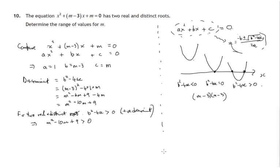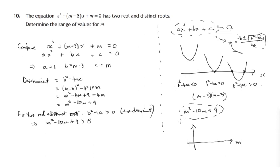So the question boils down to: how do we solve m squared minus 10m plus 9 greater than 0? Let's focus on this expression and think about its values. If we were to graph y equals m squared minus 10m plus 9 with an m-axis, it would be a parabola. To find where it crosses the m-axis, we set it equal to zero.